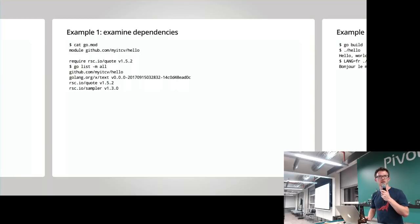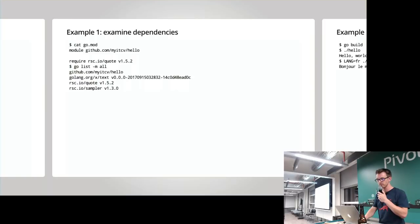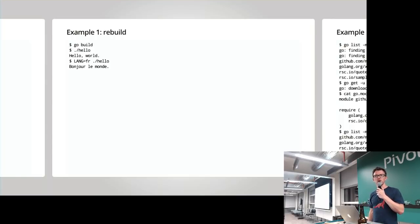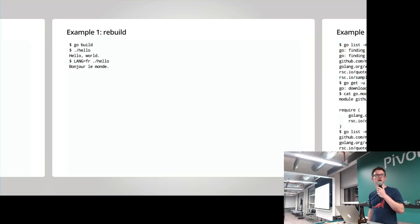I strongly encourage you to look at Russ's presentations and what's called minimal version selection and what that actually means for repeatability. Let's just run go build again — guess what? We don't have to go and fetch anything more now. We've already cached the modules. So go build, by definition, now gives us a totally repeatable build — exactly the same output. Six months down the line you could do exactly the same and get exactly the same output. That's the repeatability point.